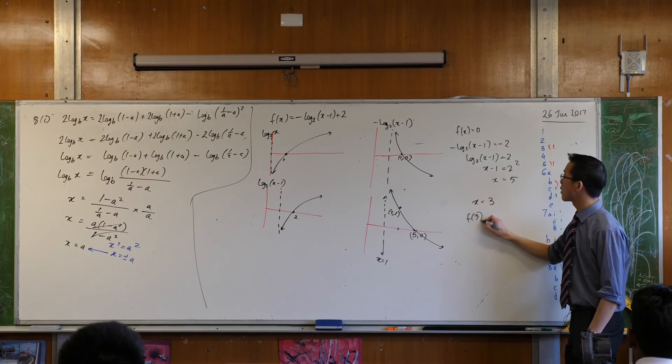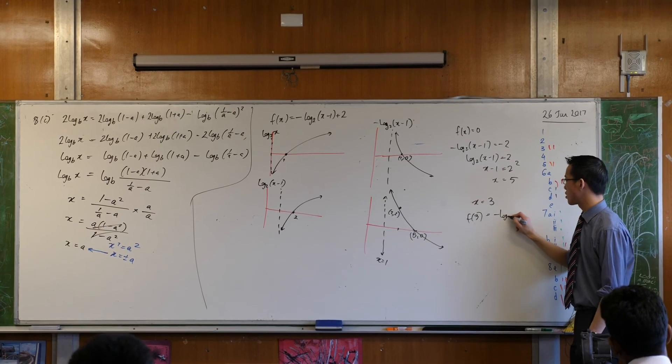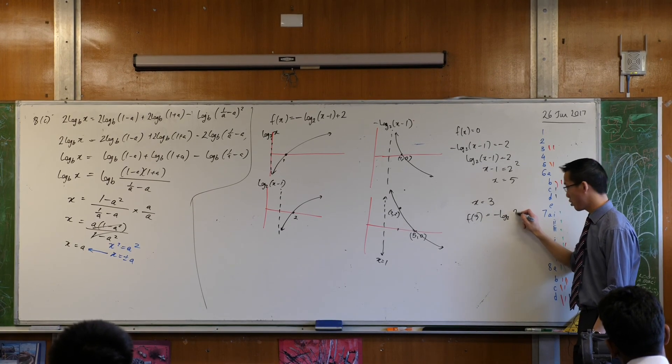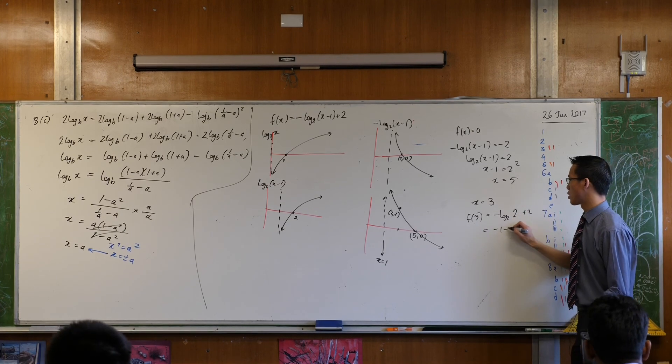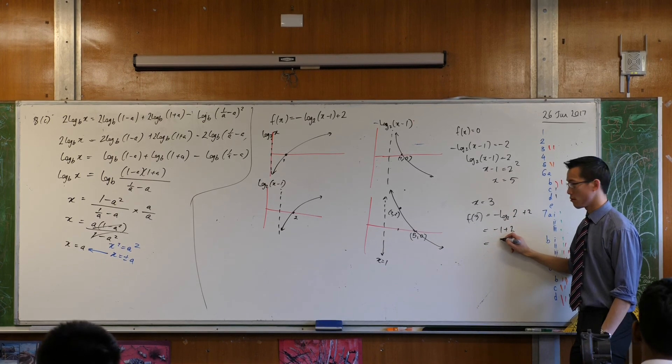Because I'm going to get f of 3 being minus log base 2 of 2. That's handy. Plus 2. This is minus 1. Plus 2. This is 1.